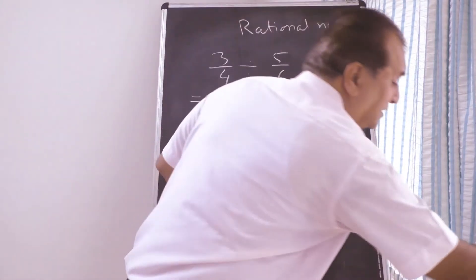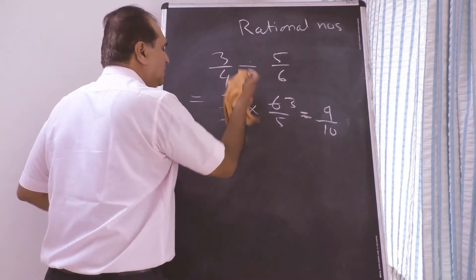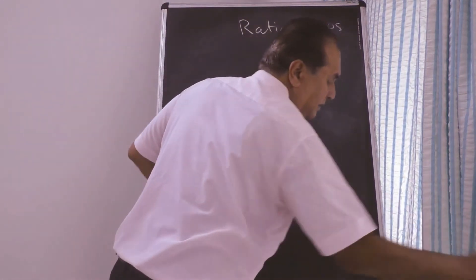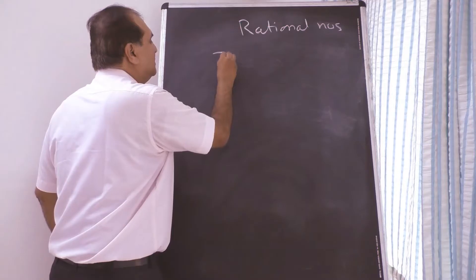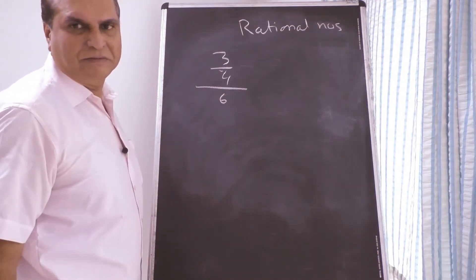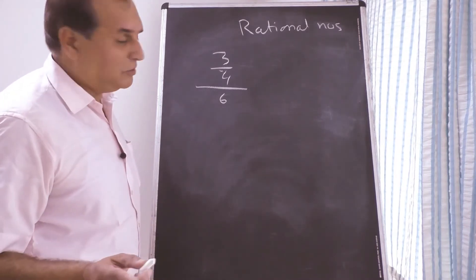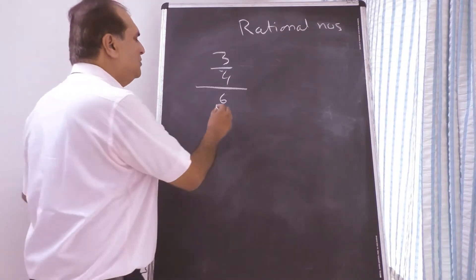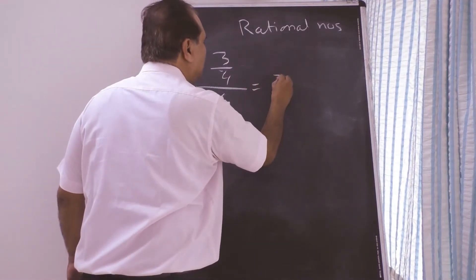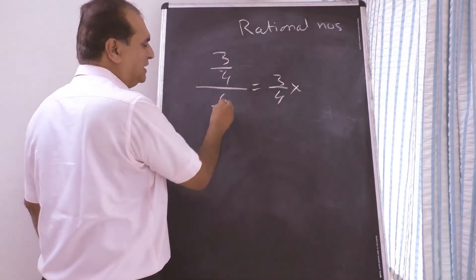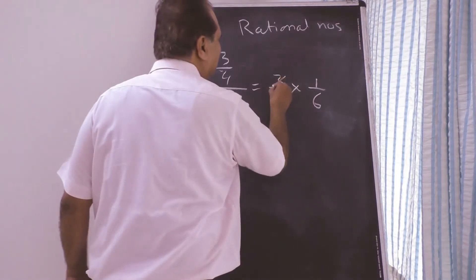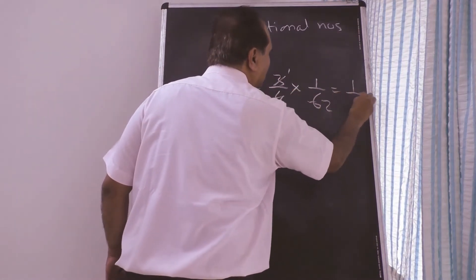Many students make a mistake when dividing by a whole number like 6. For example, 3 upon 4 divided by 6 — they forget to write 6 as 1 upon 6. You must write the whole number as a fraction: give 1 to 6, making it 6 upon 1. Then flip it upside down to get 1 upon 6, and multiply: 3 upon 4 into 1 upon 6. Cut common factors — 3 and 3, 2 and 2 — giving 1 into 1 is 1, 4 into 2 is 8. Answer is 1 upon 8.